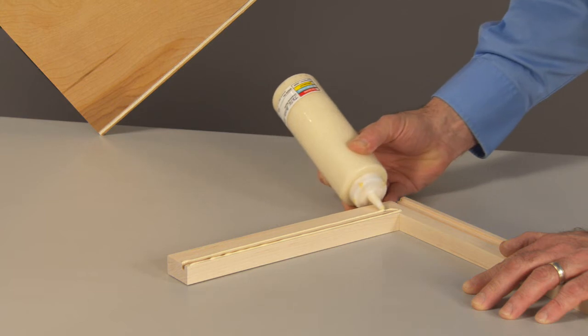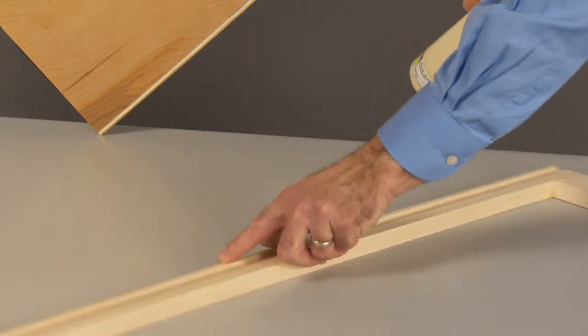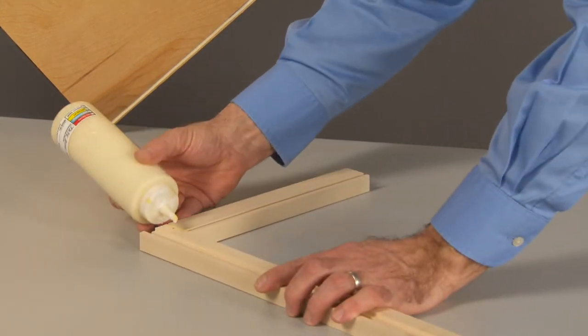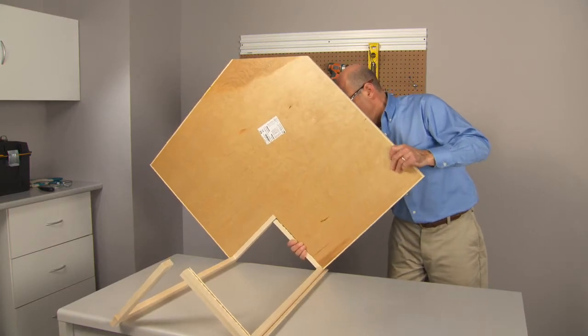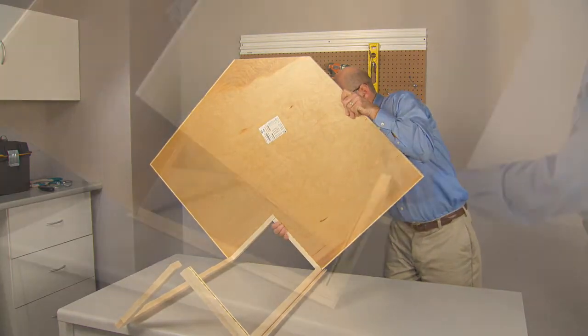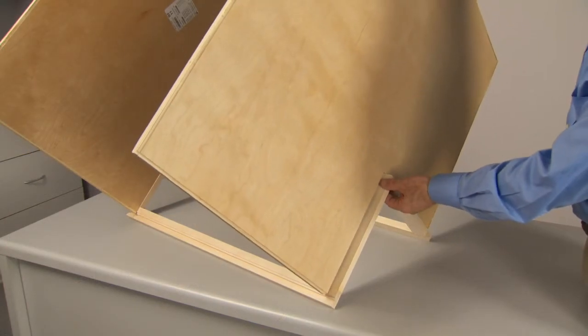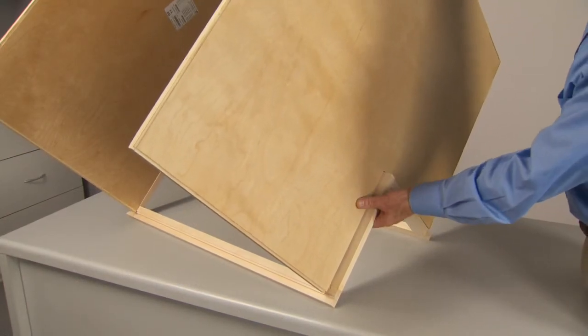Apply glue to both sides of the spline grooves on the other front frame. Attach this piece to the top of the cabinet. Now attach the bottom of the cabinet to both front frame pieces.